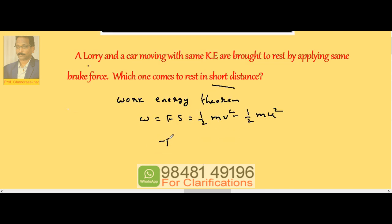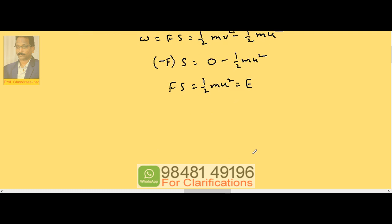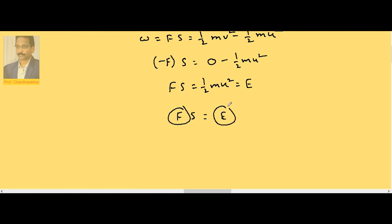So negative F into S. It comes to rest, V equals zero. Therefore F into S is equal to half MU squared. I will call it as E. So our FS is equal to E. Data suggests F is same, E is same, so definitely S must be same.